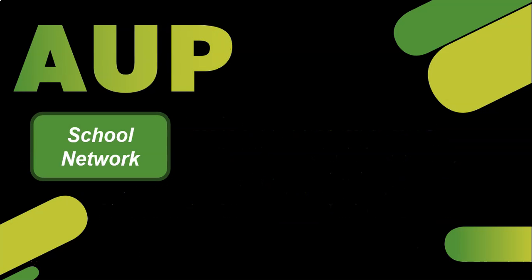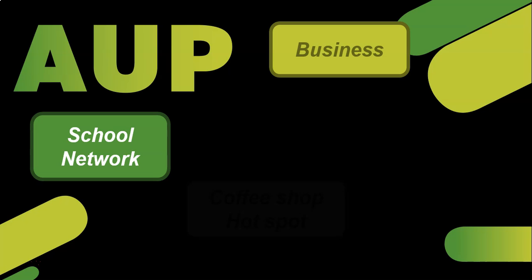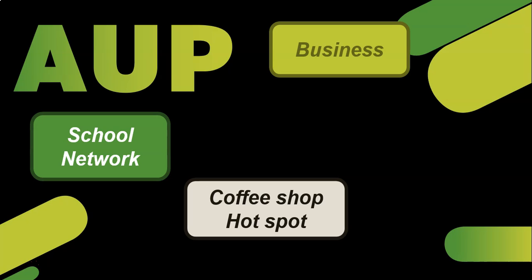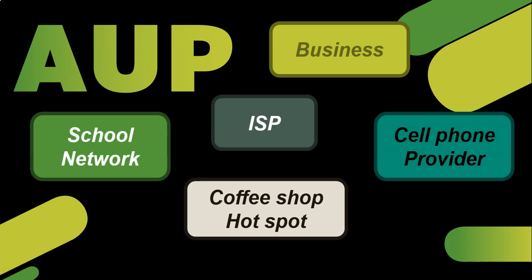You could come across an Acceptable Use Policy at your school, where there are rules about what you can do on that school network. At the business that you work at, there will be rules and regulations regarding how you can use their network. If you go to a coffee shop and use the hotspot, they might have rules about what you can and cannot do. Even your internet service provider or cell phone provider will give you an Acceptable Use Policy because you are connecting to the internet via their device.